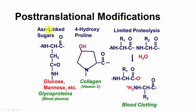Glycoproteins have sugars attached post-translationally — many blood plasma glycoproteins have asparagine-linked sugars such as glucose and mannose linked to the nitrogen of asparagine. Hydroxyproline is also found in collagen and requires vitamin C for its formation, just like hydroxylysine. Limited proteolysis — cleaving peptide bonds by adding water — is another form of modification that activates the blood clotting cascade.